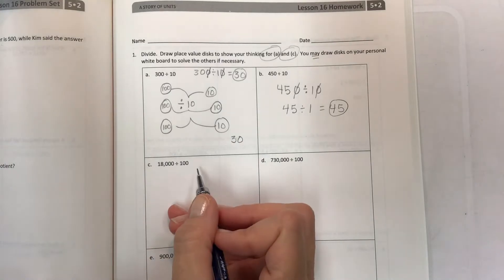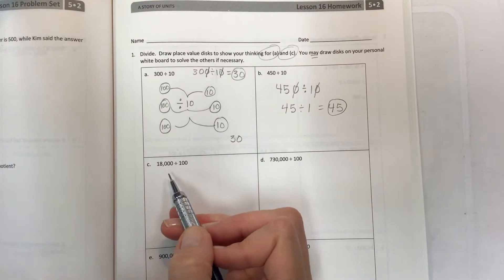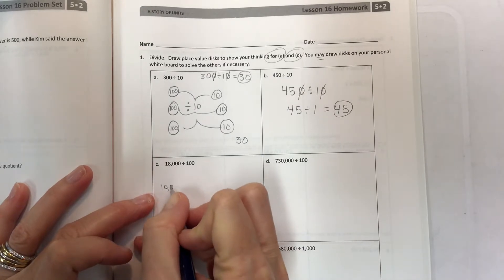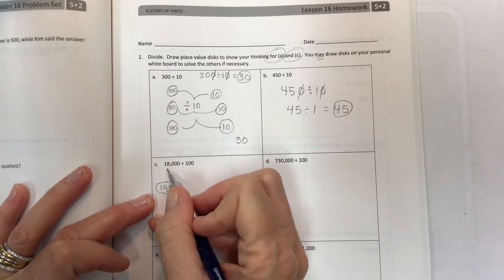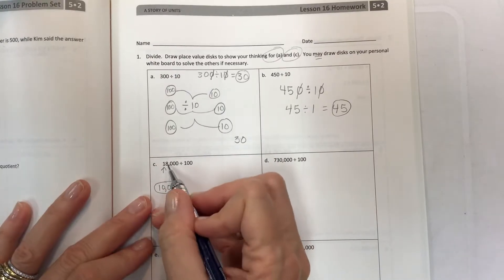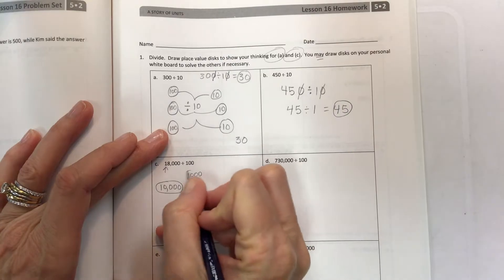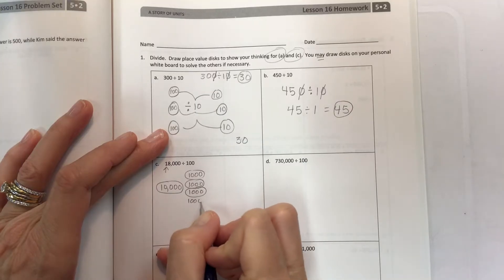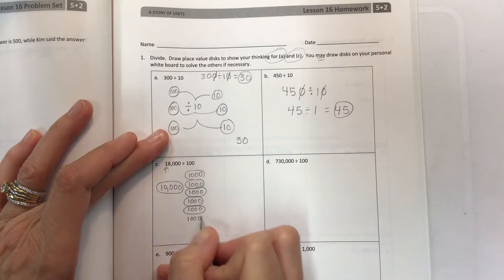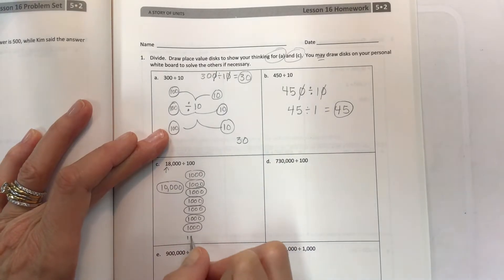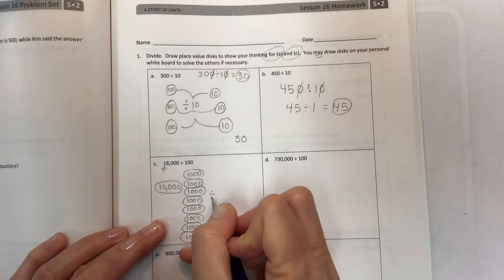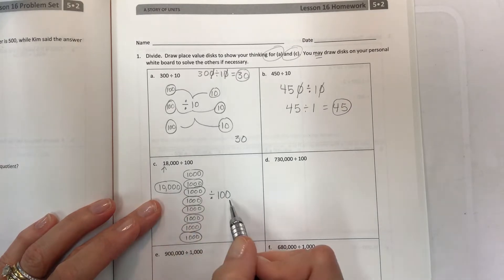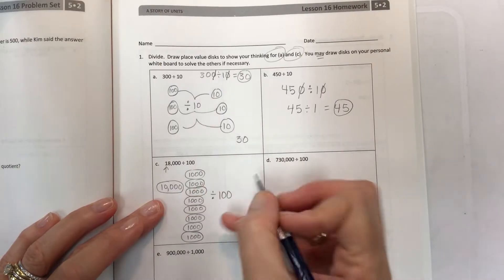For C we also have to make place value discs, and now instead of 300 I have 18,000. So do I have to do a whole bunch of discs? Well, you can create a 10,000 disc, and then I only need eight 1,000 discs. 100 is your divisor, so everything gets divided by 100.